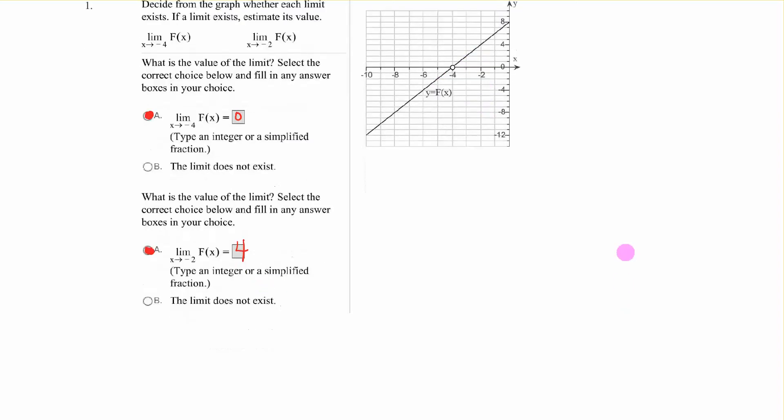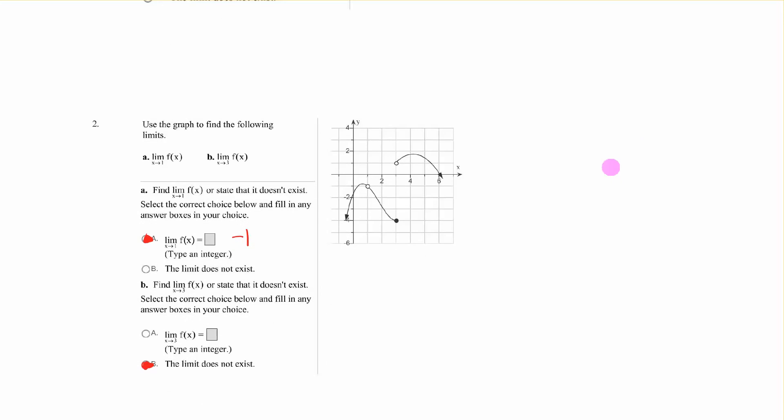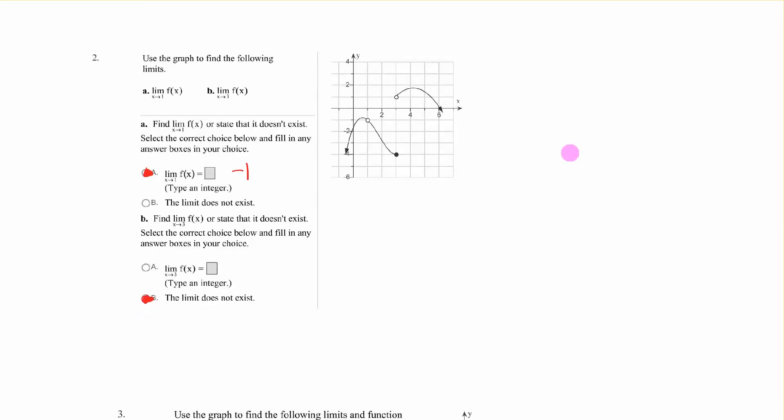Okay, so those are pretty straightforward. The limit as x, f of x approaches 1, as x approaches 1. So here's 1. As this graph goes to 1, what's the y value there? Negative 1.